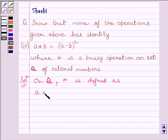A star B is equal to A minus B whole square. Now let us assume E is the identity element in set Q.